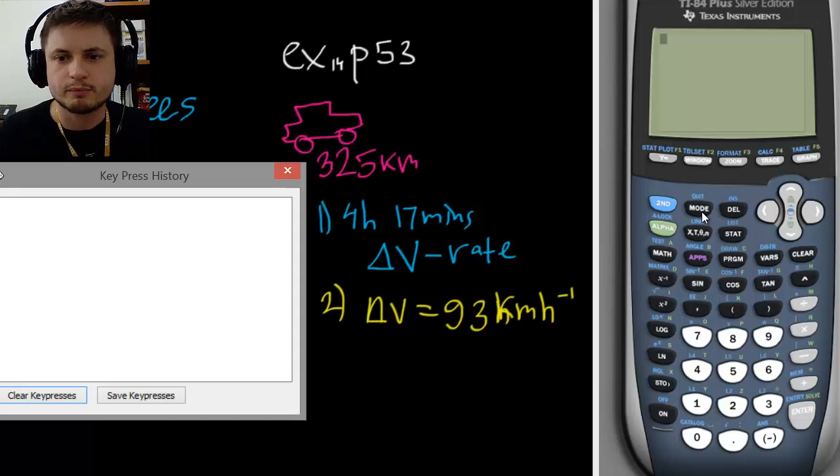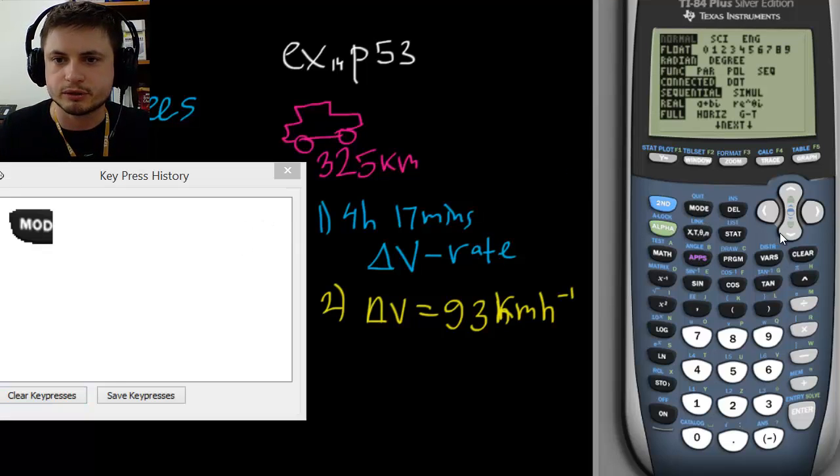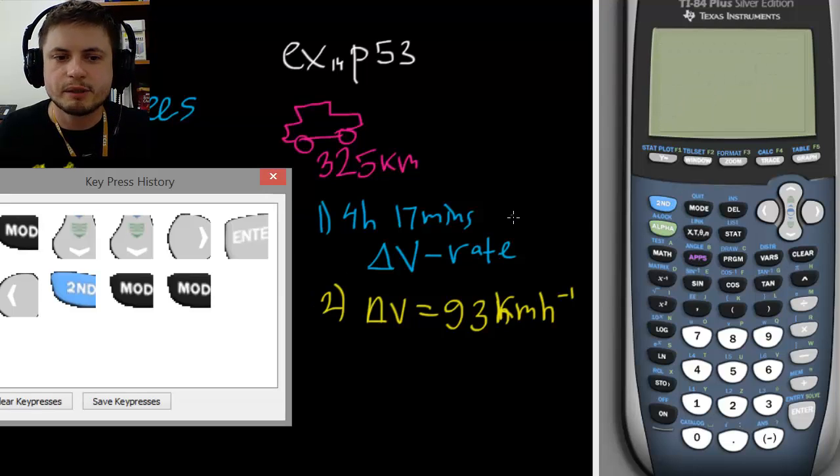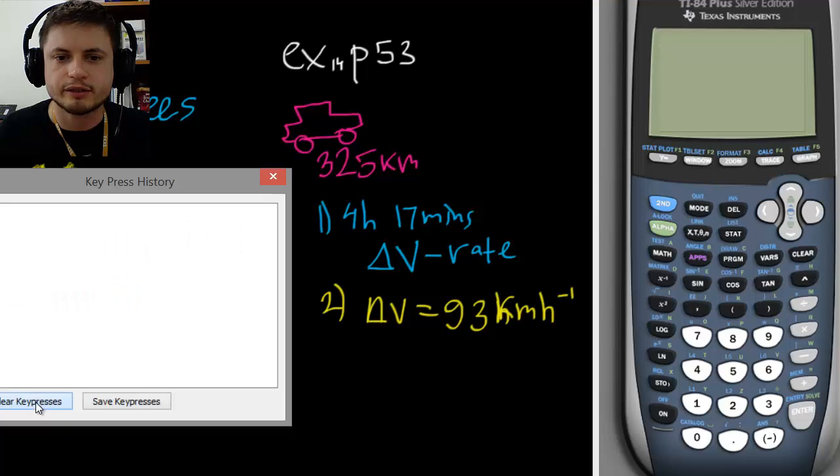First step, step number one, press on mode. Mode is right here on top and this will bring you to this little window. Now what you want to do is usually by default this is set to radians, you want to change it to degrees and press enter so it starts blinking on degrees. That's what we need to make this work. So click on degrees and then close it, quit. That's pretty much it, this is enough for us to start calculating.